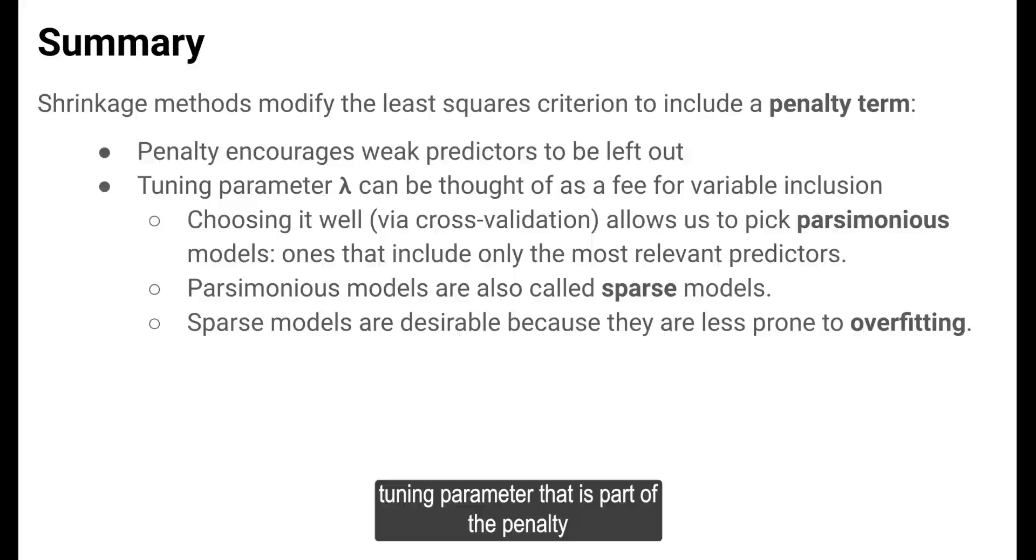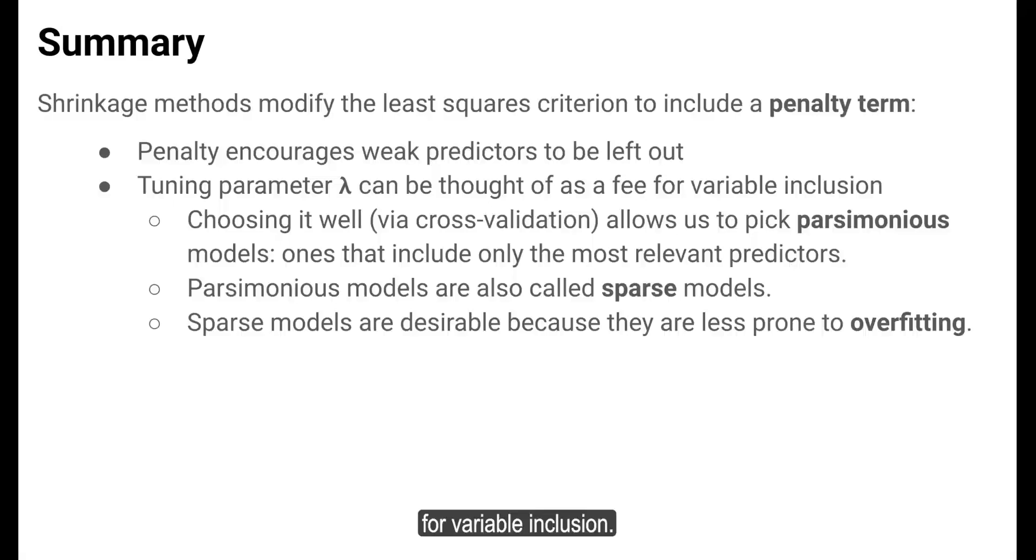The lambda tuning parameter that is part of the penalty can be thought of as a fee incurred for variable inclusion. Choosing it well, usually via cross-validation, allows us to pick parsimonious models—ones that include only the most relevant predictors.